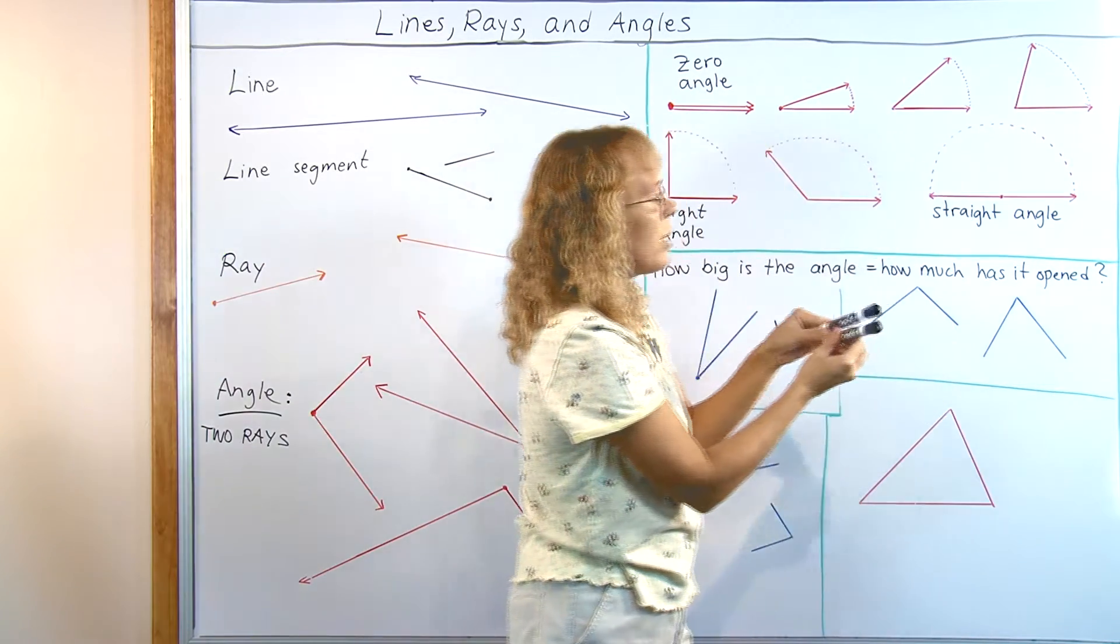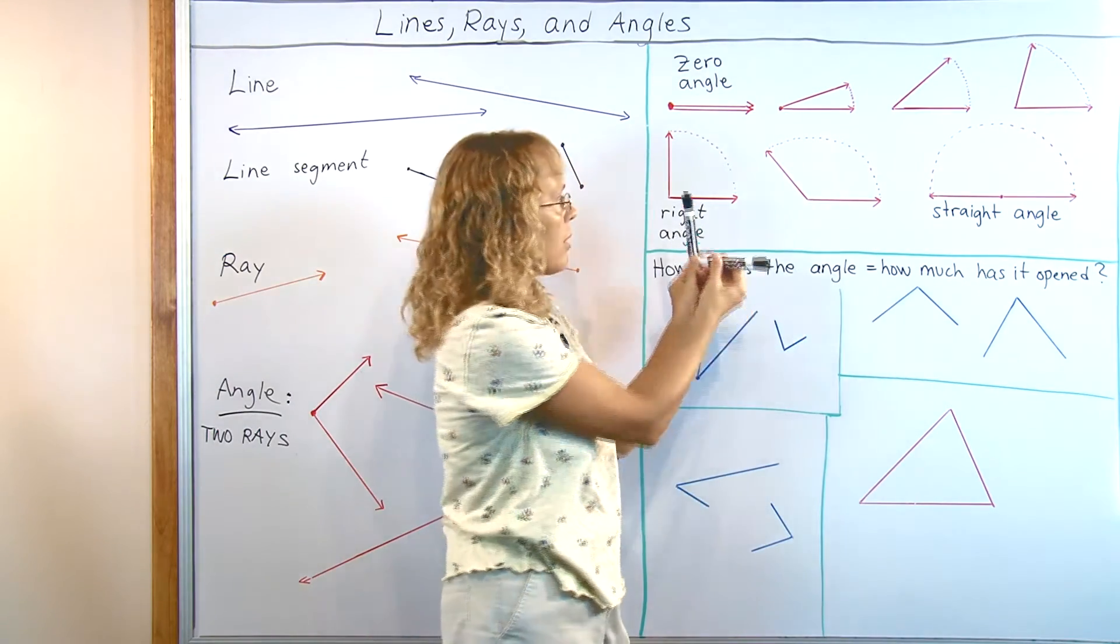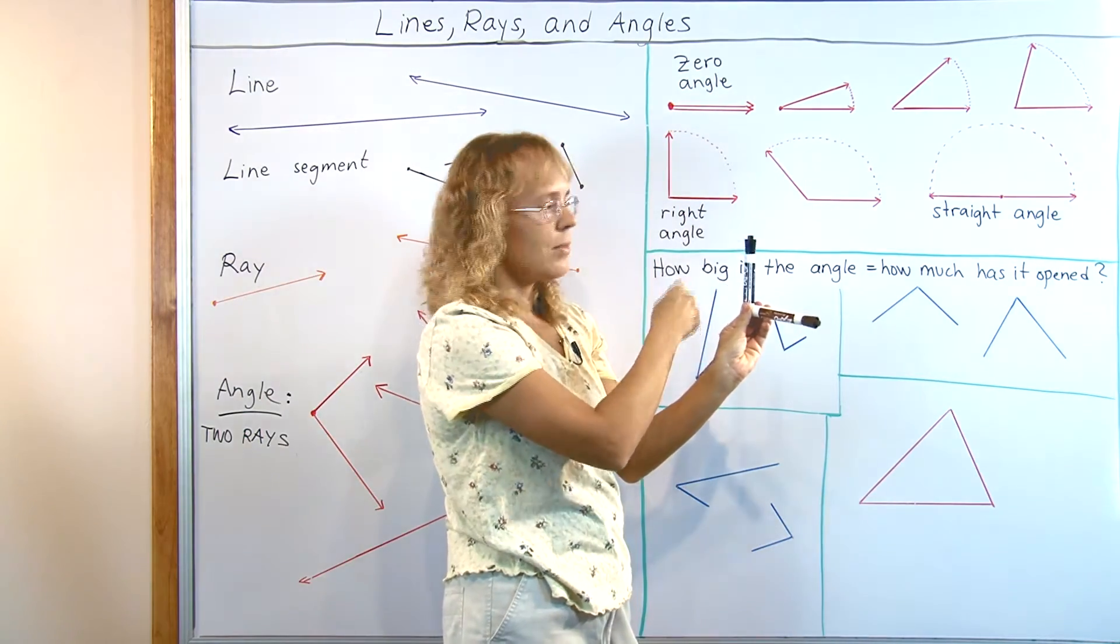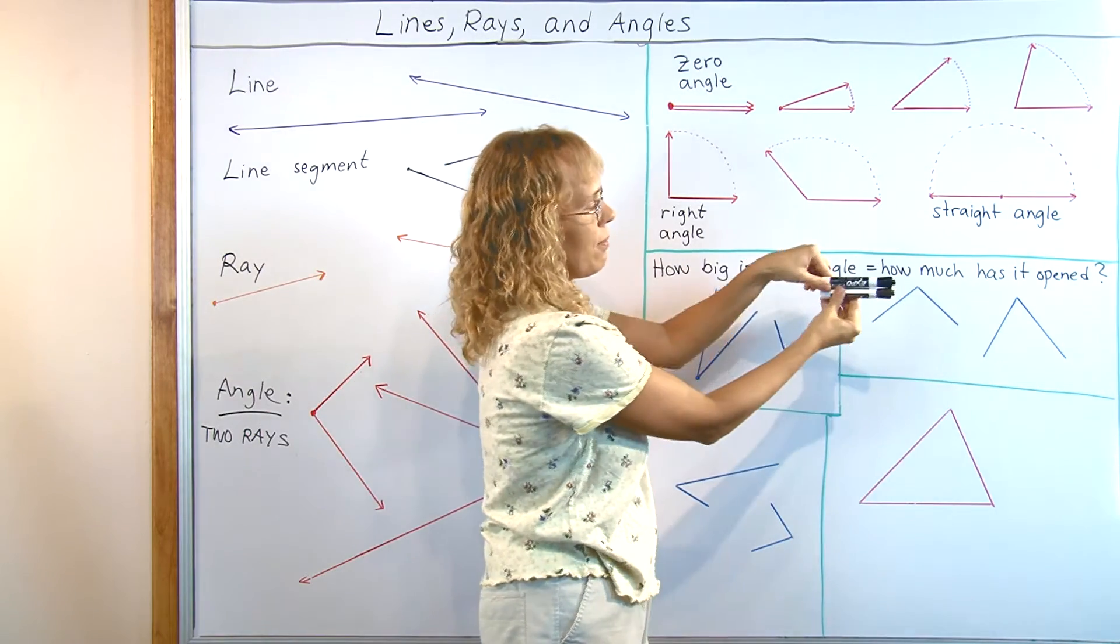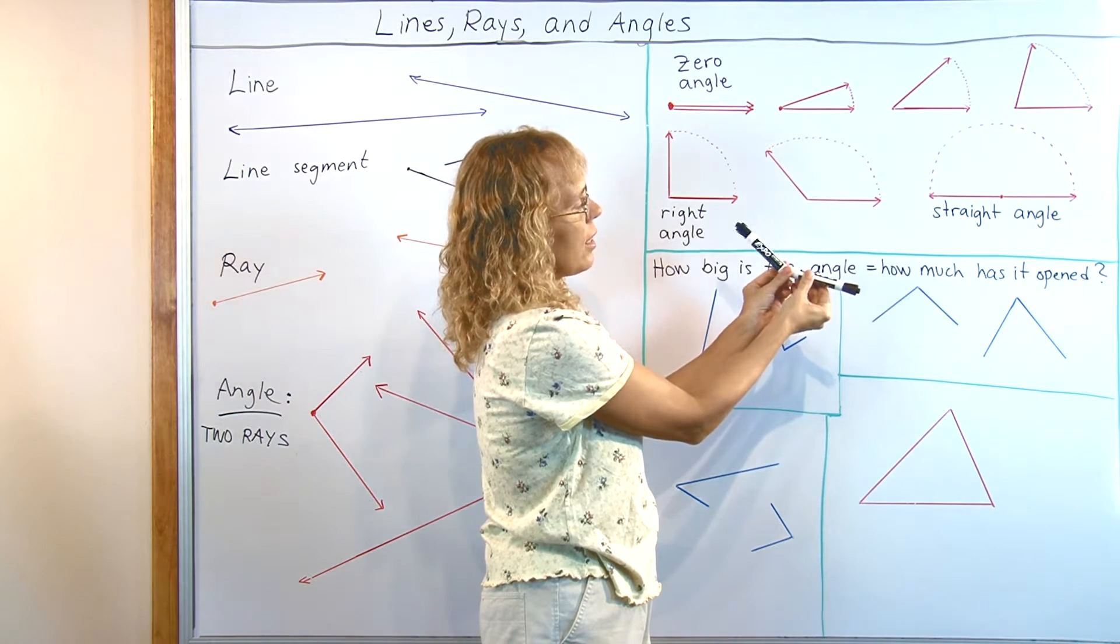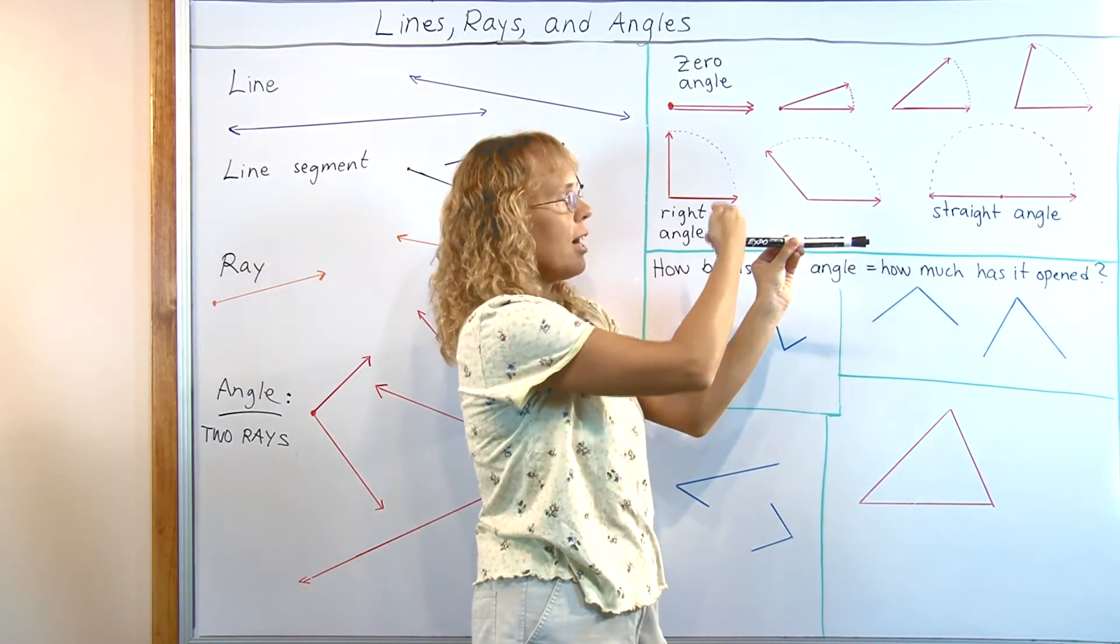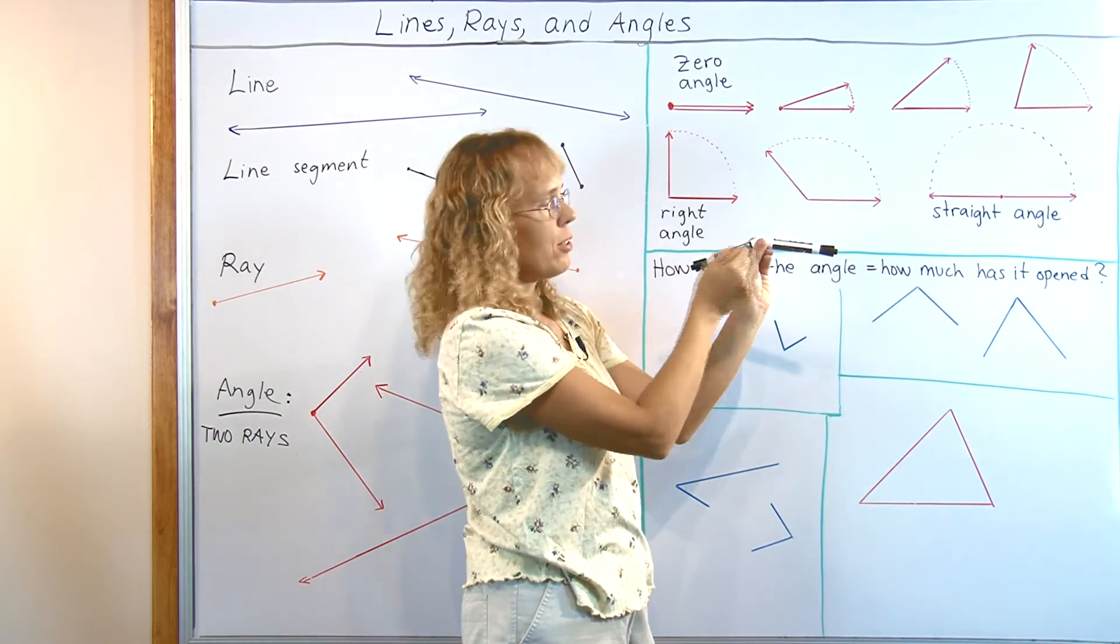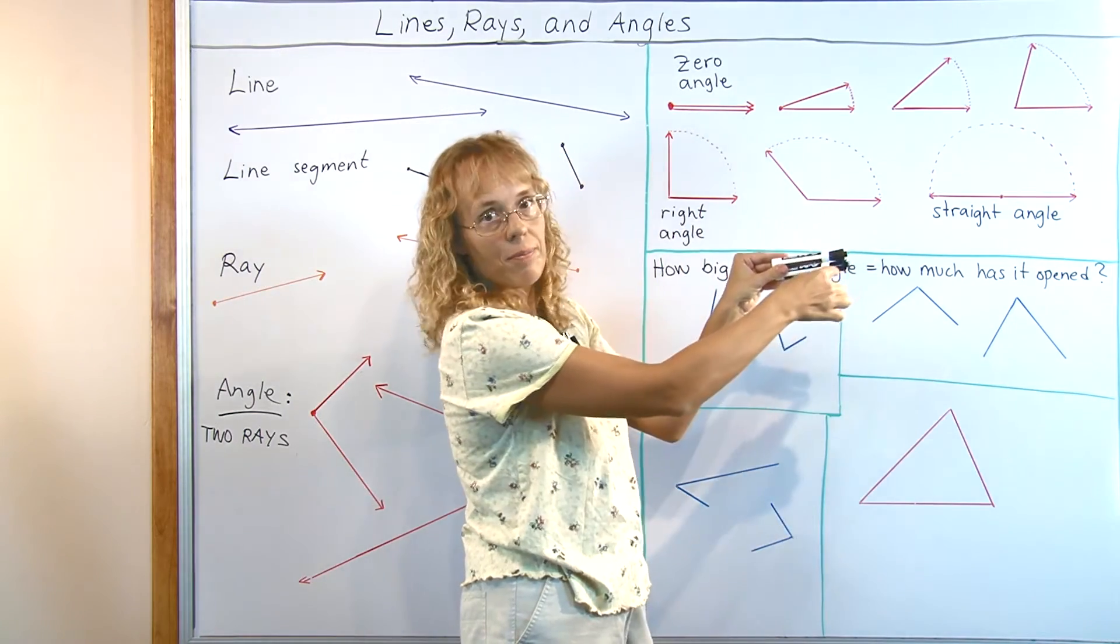And here the angle is opened up some more. And if I open it up this much, I have a right angle. It's basically half of a half circle. The angle has opened half of a half circle. I can open it up some more now, and then I can open it up to this point, which is a straight angle. And then this would have drawn a half circle here. And then it can go on even more, more than a half a circle. And it can go all the way back to here, when it would have traced a whole circle.